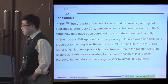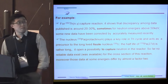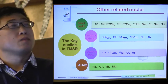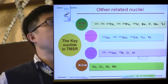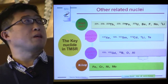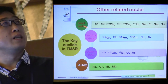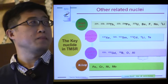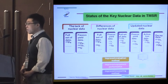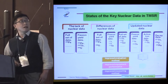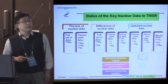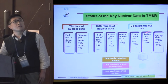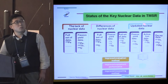Moreover, this leads to some estimates differing by almost a factor of 2. Some other related nuclei include, for example, fuel salt, reactor poison, and control rod. The status of the key nuclear data in TMSR shows nuclear data lacks, nuclear data differences, and some nuclear data need to be updated. How to solve this? Improved evaluation methods, improved equipment, and improved measuring methods. Experiments still show big differences and larger errors for uranium and thorium N-gamma and N-fission reactions.